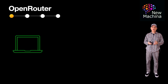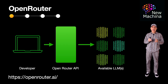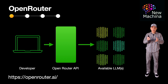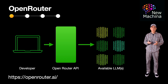Open Router is a service that provides unified access to multiple large language models through a single API. This flexibility and aggregation of LLMs makes it easier for developers to experiment and scale LLM deployments across multiple providers.